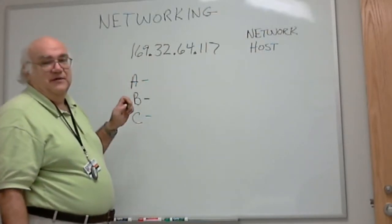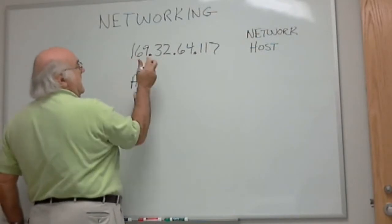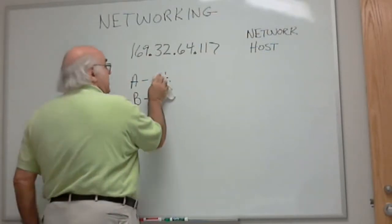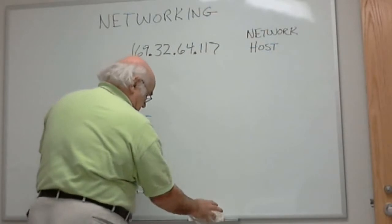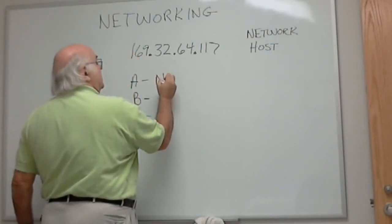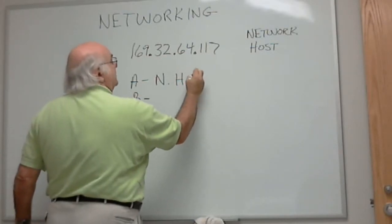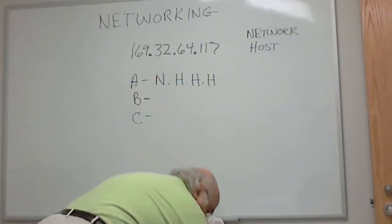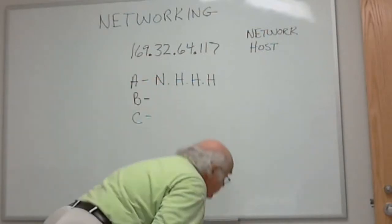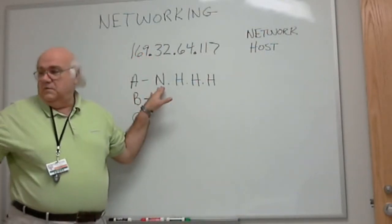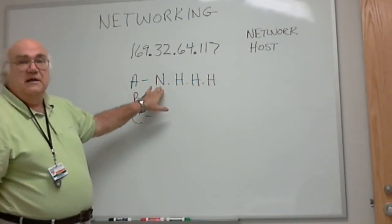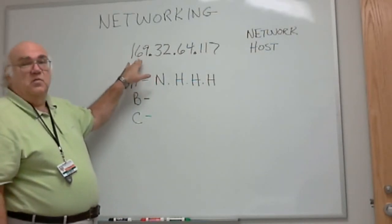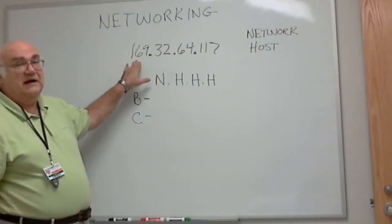A class A address used the first byte as network, and the last three bytes were the host address. Let's think about what that means. If I have one byte or eight bits as my network portion, how many networks can I make out of that? You remember from your dotted decimal, one dotted decimal number can be anywhere from zero to 255.